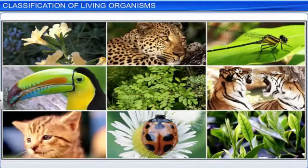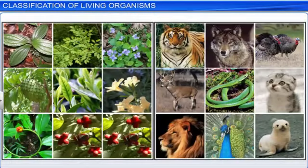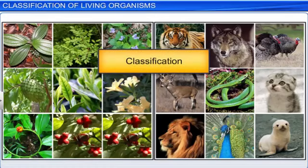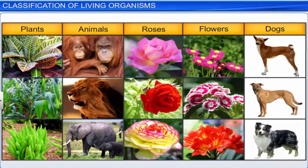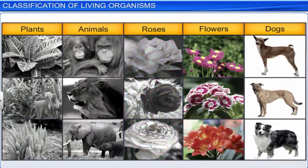Apart from assigning scientific names to living organisms, they must be aptly organized for easy study. The process of grouping anything into convenient categories based on easily observable characters is known as classification. For example, plants, animals, roses, flowers, and dogs are groups that we can easily recognize. Each group has specific characteristics and are convenient categories that help us to study organisms.